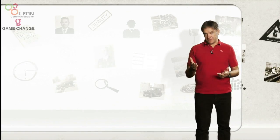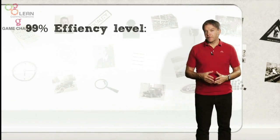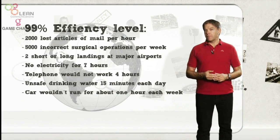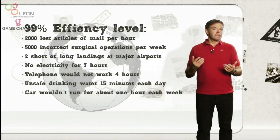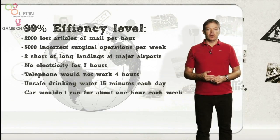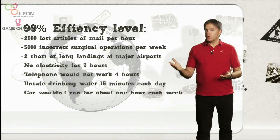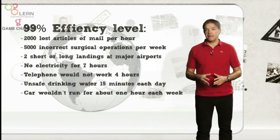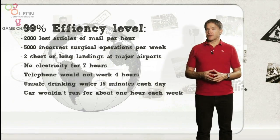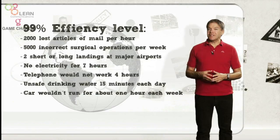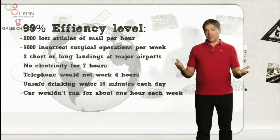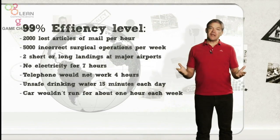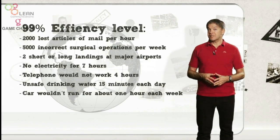Consider this. A 99% level of efficiency would mean 2,000 lost articles of mail per hour, 5,000 incorrect surgical operations per week, two short or long landings at most major airports every day, no electricity for almost seven hours each month, the telephone would not work for four hours each month, unsafe drinking water for almost 15 minutes every day.